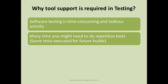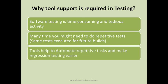Tools help to automate repetitive tasks and make regression testing easier. Because regression testing needs to be executed in each and every build, automation tools help you automate these repetitive tasks. You can execute those tests in future builds with the help of a tool rather than manually — executing a hundred tests manually takes much longer than using an automation tool.